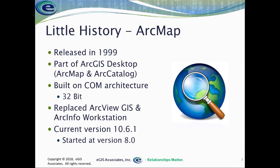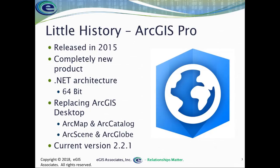ArcGIS Pro is Esri's newest desktop application. It was released in 2015, and it is a completely new product — not just an update to ArcMap and ArcCatalog. It's built on a .NET architecture and it's fully 64-bit enabled, which means it can leverage all of the power that a modern computer has. It's typically faster than ArcMap for most everything it does and will have added capabilities because of its ability to leverage greater hardware.